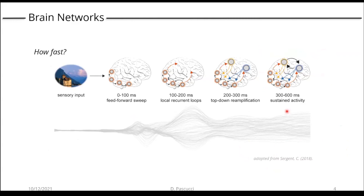How fast are these dynamics? They are extremely fast. Just imagine the time it takes for you to recognize the content or the meaning of an image. This seems trivial to us, but it's something that requires very fast exchange of information — feed-forward and feedback — among regions of the brain that are very distant. And this is all a matter of milliseconds.